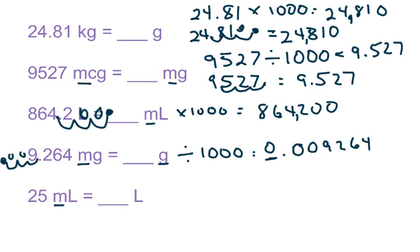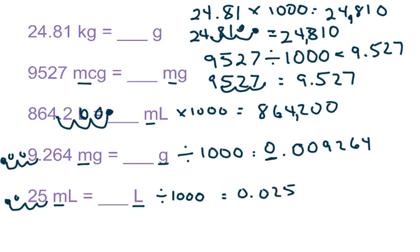Next, I'm going from a milliliter to a base. One letter is a base, so I'm going up, which means divide by a thousand, or move the decimal to the left — one, two, three. Fill in the holes with a zero and you get 0.025. Don't forget to write the leading zero.